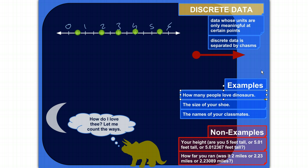How many people love dinosaurs? Well, you can only have whole numbers there. I mean, maybe it's three people, maybe it's a billion people, but you're never going to have 5.182 people who love dinosaurs. So the number of people who love dinosaurs can only take on certain values. That only makes sense at certain points.